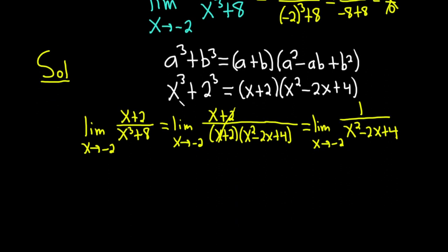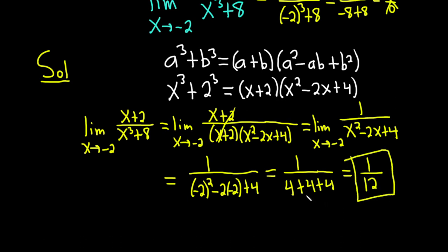So this is going to be equal to 1 over negative 2 squared minus 2 times negative 2 plus 4. It's really important to be careful, because there's a lot of negatives here. This is equal to 1 over, negative 2 squared is 4, negative 2 times negative 2 is 4, and we have another 4. We have 4 plus 4 plus 4, which is 12. We have 1 over 12. And that would be the value of the limit in this problem.